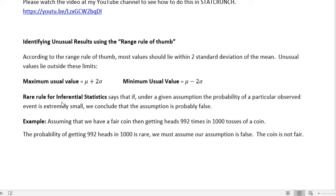The rare rule for inferential statistics says that if, under a given assumption, the probability of a particular observed event is very small, we conclude that the assumption is probably false. For example, assuming we have a fair coin, getting heads 992 times in 1000 tosses has a very rare probability. So we must assume our assumption is false and the coin is not fair. If we see something that has a really small probability, we start to question our assumption. That's the rare rule.